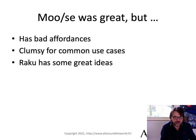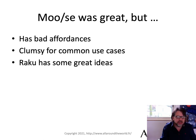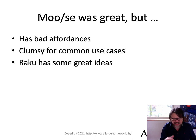Moose was great, but it's a bit slow — that's part of the reason Moo came about. It does have some bad affordances; it encourages your data to be promiscuous. It's clumsy for a lot of the use cases we want. And Raku has some great ideas, but Raku is a different programming language. Trying to backport some of the ideas from Raku to Perl has already proven problematic — there are things with list flattening that make some data declaration complicated. So we're not going that route.